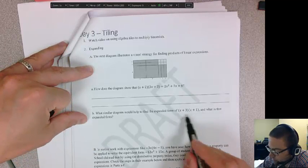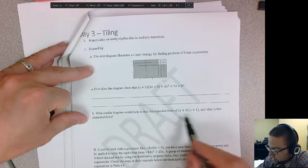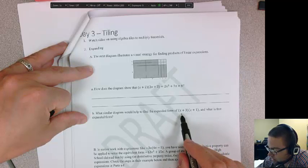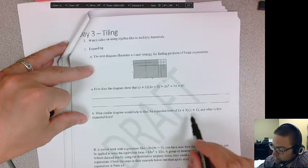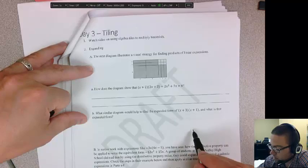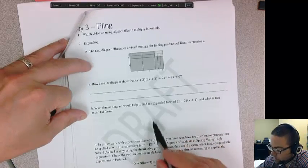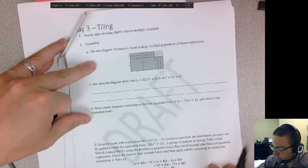Now I want you to draw an expanded form. How does this work? So x plus 3 and x plus 1 when it's multiplied together, draw that picture of the algebra tiles, how it would look.